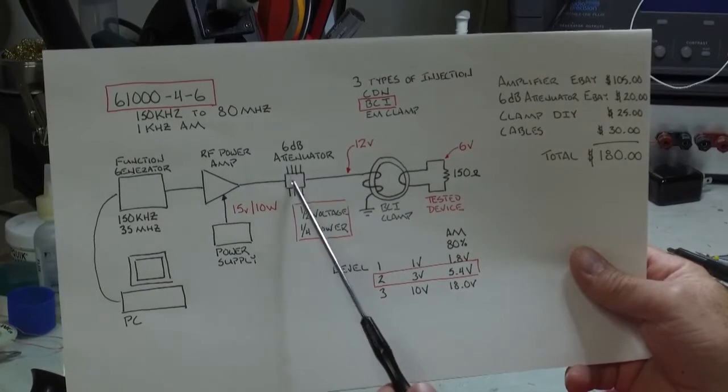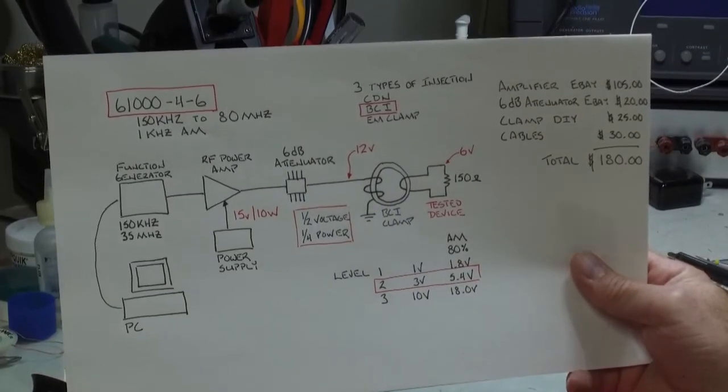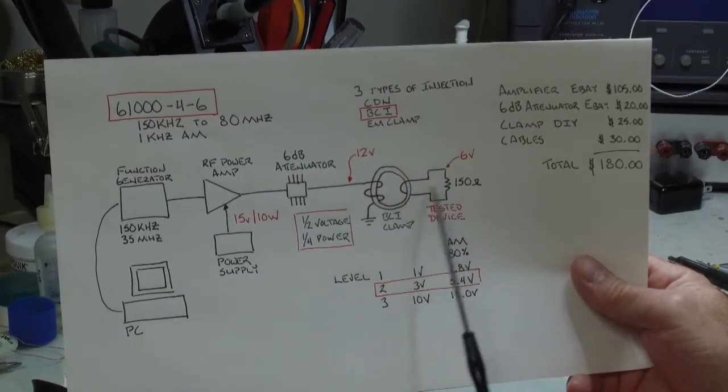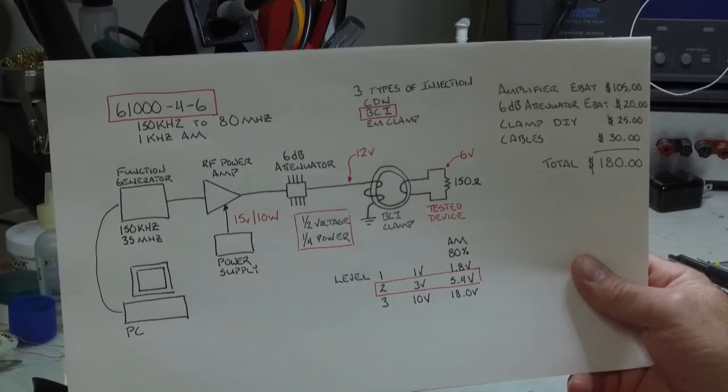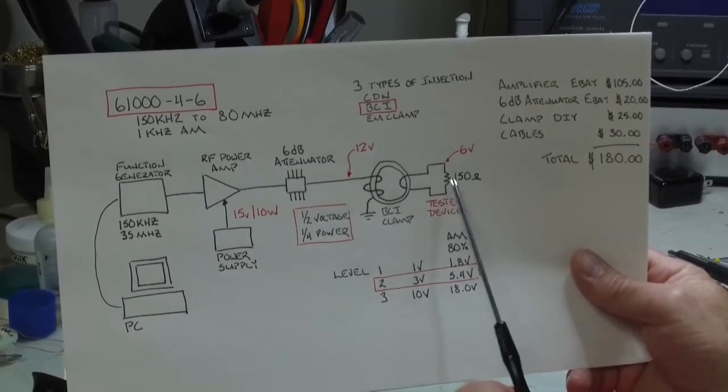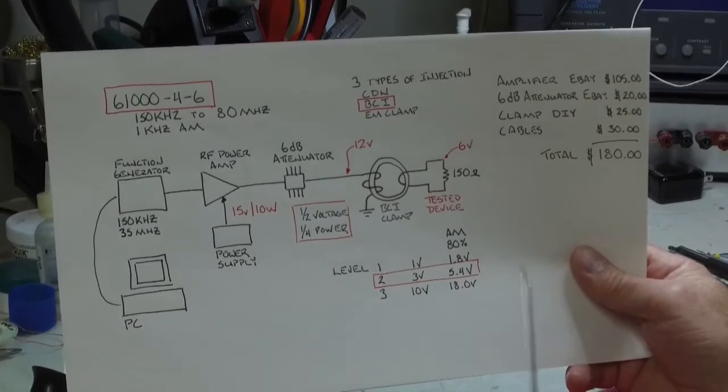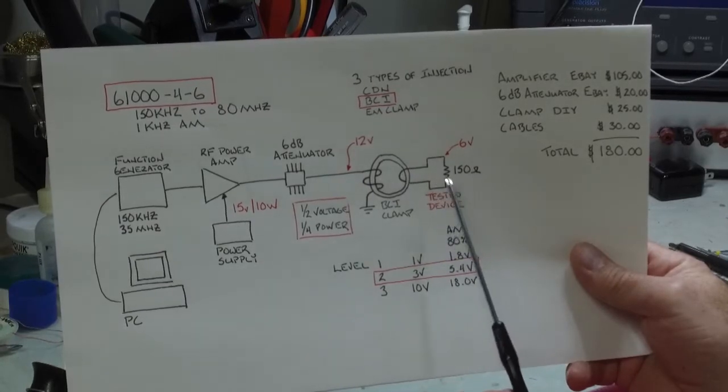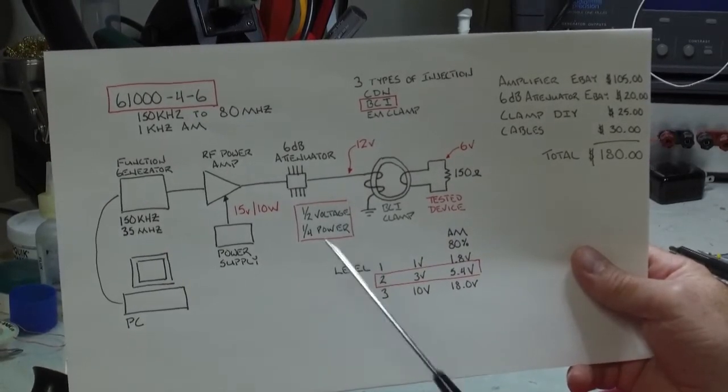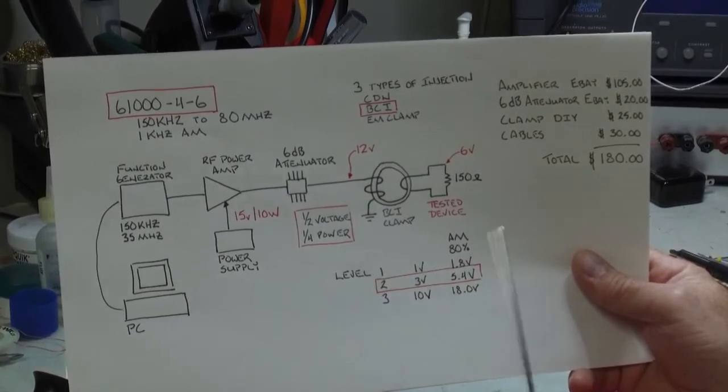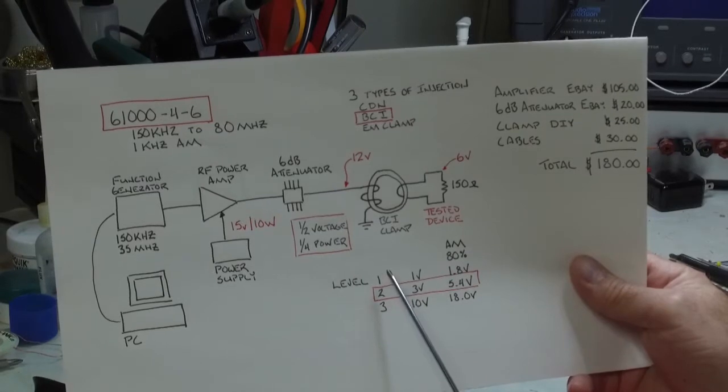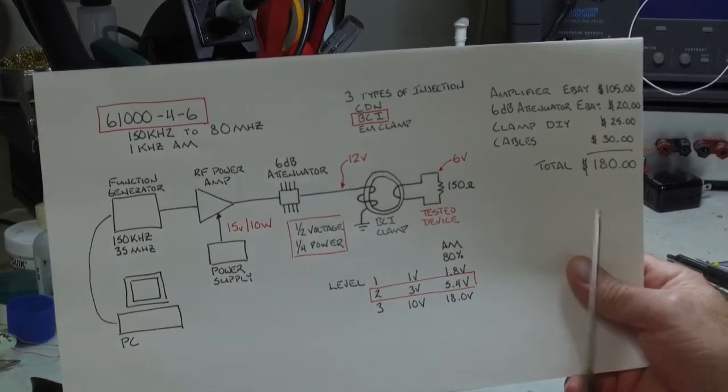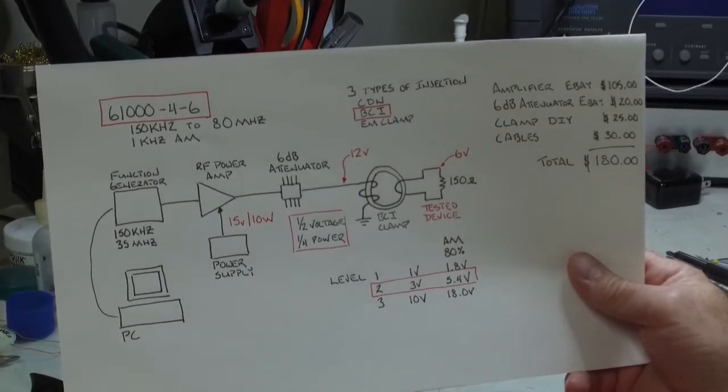So you can see the amplifier, the function generator drives the amp, goes to the attenuator, goes to this bulk coupling clamp, and I'm showing one loop through and the specification notes that the typical impedance is 150 ohms. And so I have my scope attached across a 150 ohm load, single turn through the toroid to measure my voltages. The specification notes three levels, level one, two, and three, which correspond to one volt, three volt, and ten volts that need to be induced onto this 150 ohm load.